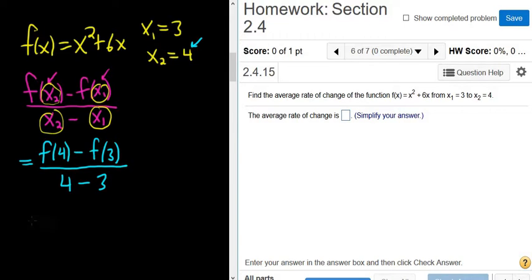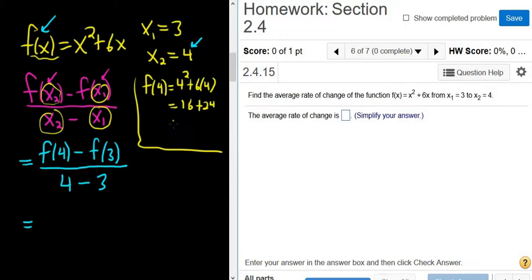f(4) means you plug in 4 into your function here. So we can go to the side and do it. We're going to plug in 4 into this function. So f(4), that's going to be 4² + 6 times 4. 4² is 16, and 6 times 4 is 24. So this is going to be 40.